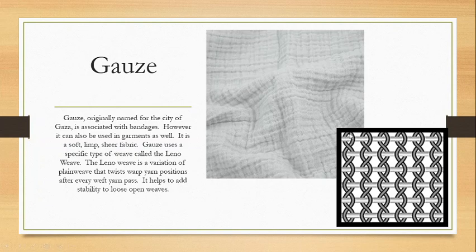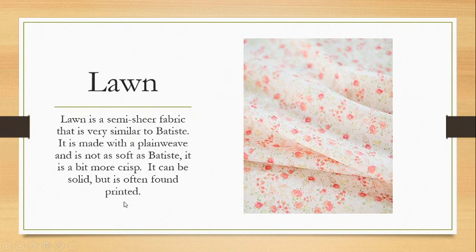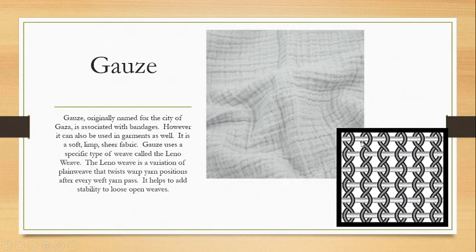The leno weave takes these warp yarns and after every pass of a weft, it twists along its partner. So a warp yarn goes under a weft, then twists over its neighbor, goes under again, twists over again — we still get an over-under pattern going down the line, but all the yarns are switching positions. That's the leno weave; it's quite old and is used to help stabilize loose open weaves.